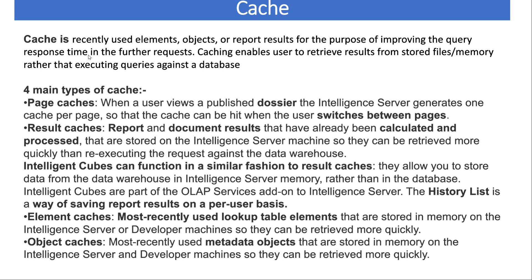Let me quickly recap. Page cache is on the dossiers - when you are running and switching between one page to another, the page cache will be created. The result cache can be report cache, document cache, history list cache - basically their results are being stored into the system. Next time you run the report, grid report, or a document - by document I mean the report service document, RSD. And third is the element cache - all the attribute elements which have been used recently. Object cache is the definition of those objects.